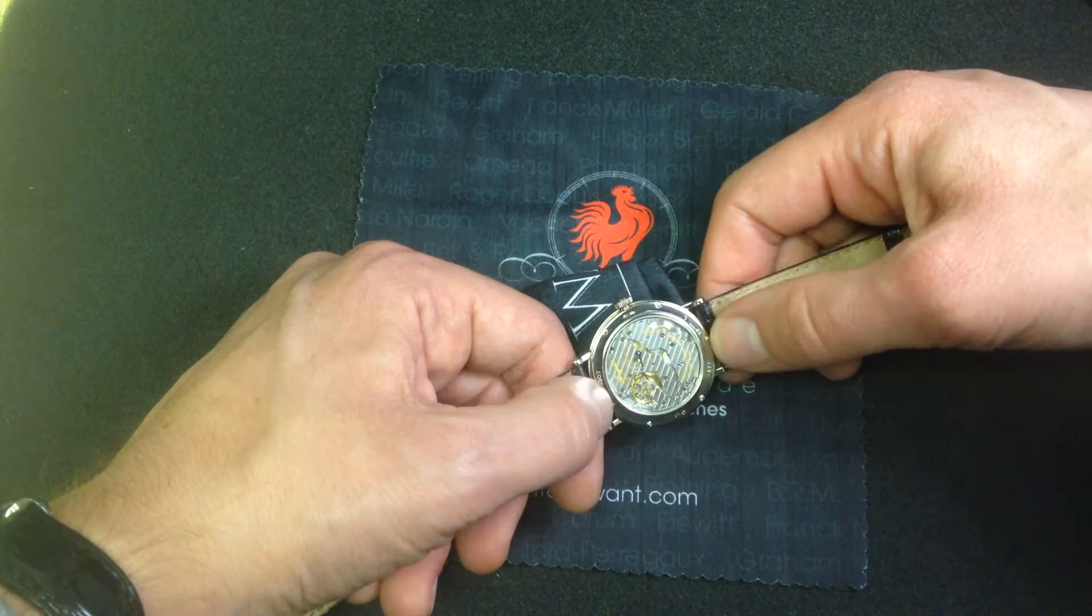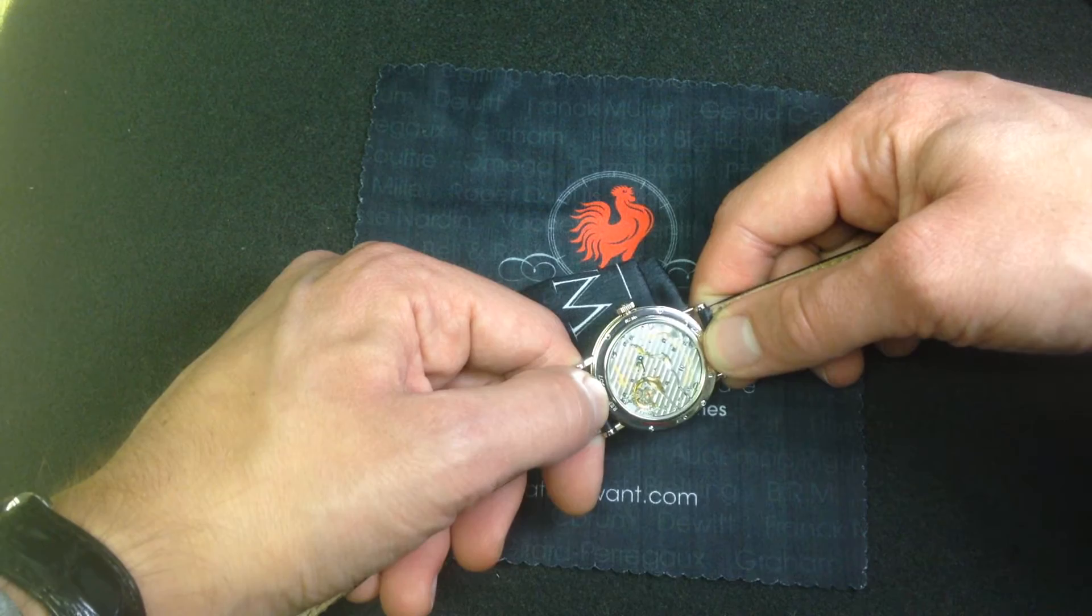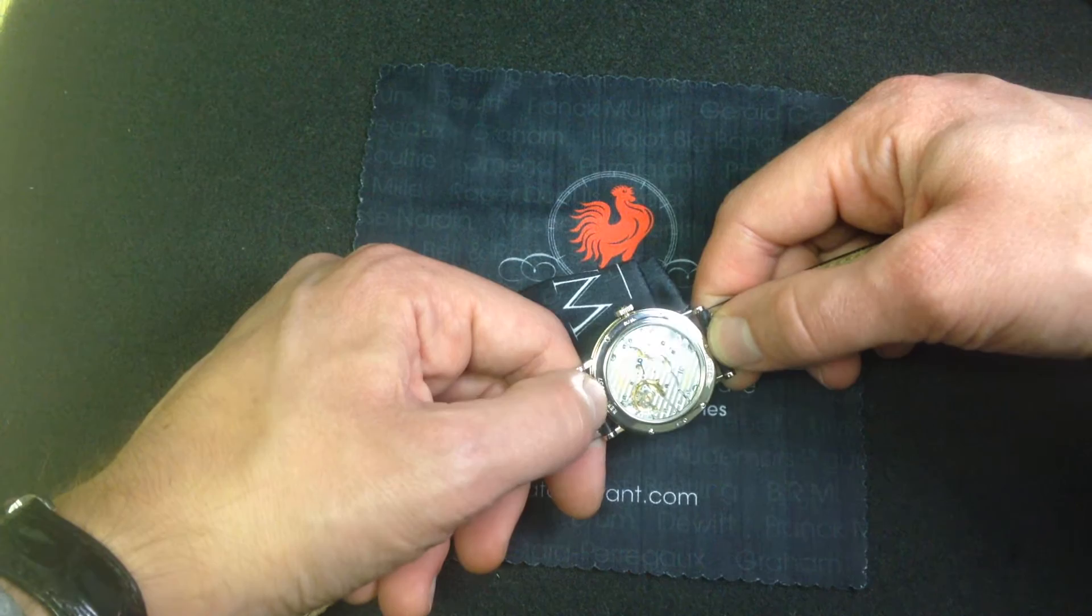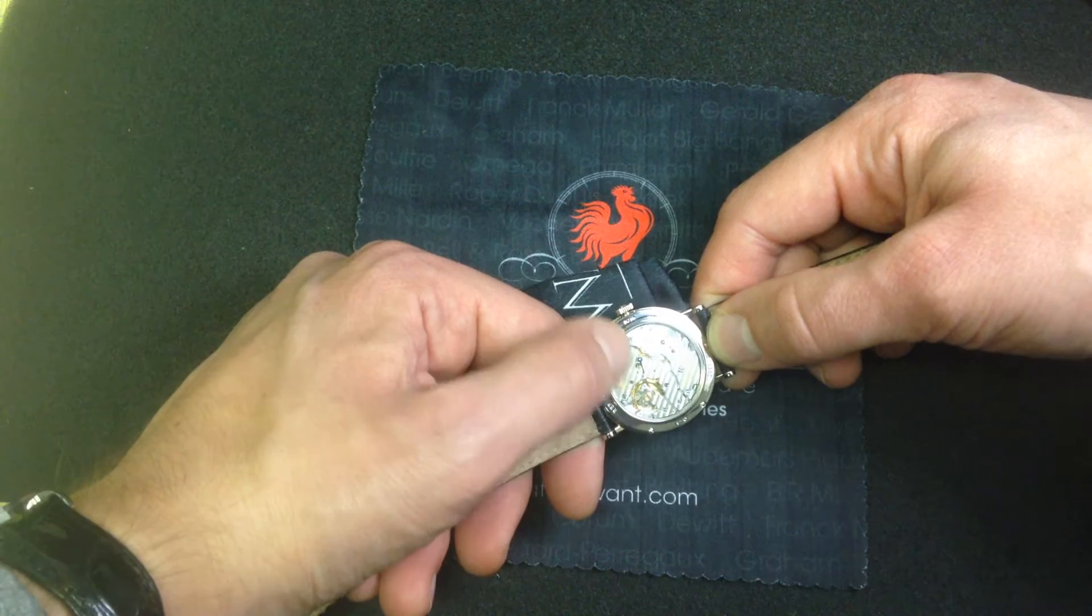This watch is powered by the Breguet caliber 511 DR. In its prior life, this was known as the Frédéric Piguet 1150, a high-endurance, ultra-thin, fine, high horology caliber, automatic, often used by Blancpain.